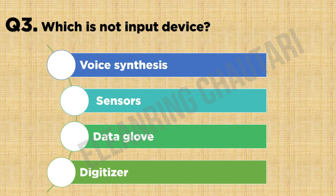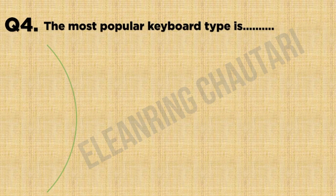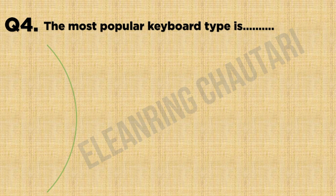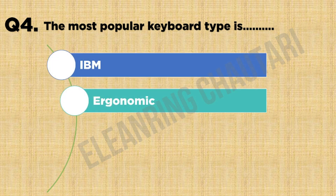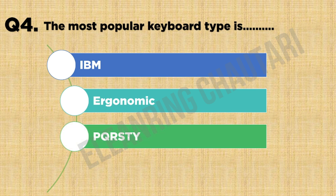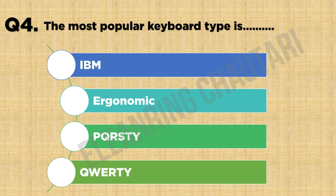On to question number 4. The most popular keyboard type. Option A: IDN. Option C: QWERTY. The most popular keyboard type is QWERTY — Option C.